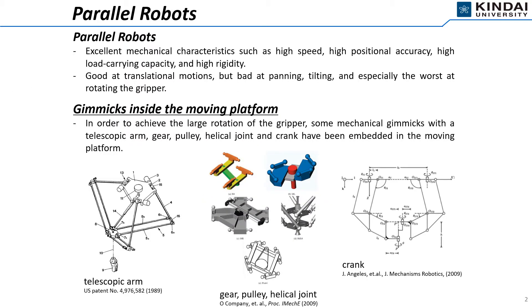The parallel robot has excellent mechanical characteristics such as high speed, high positional accuracy, high load carrying capacity, and high rigidity. The parallel robot is good at transcender motions but bad at panning, shooting, and especially worse at rotating the gripper. In order to achieve large rotation of the gripper, some mechanical gimmicks such as gear and pulley have been embedded in the moving platform.